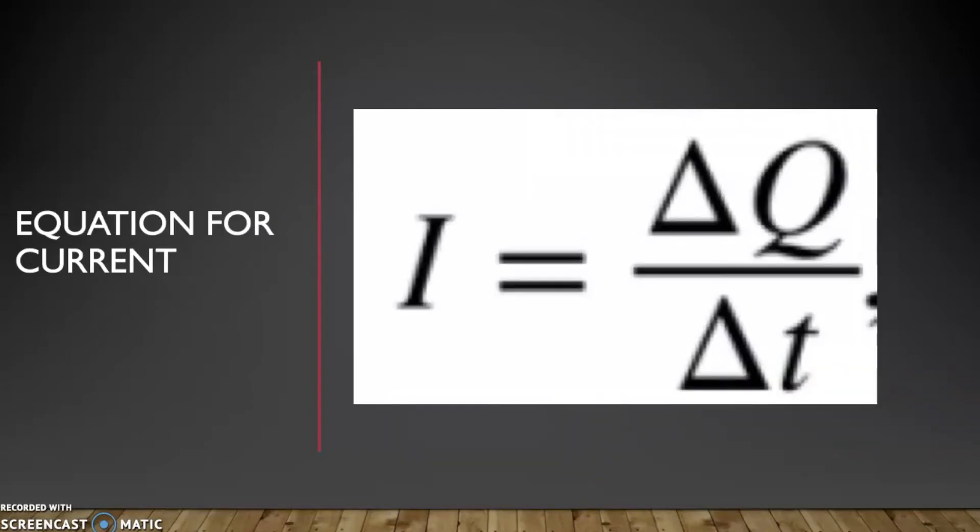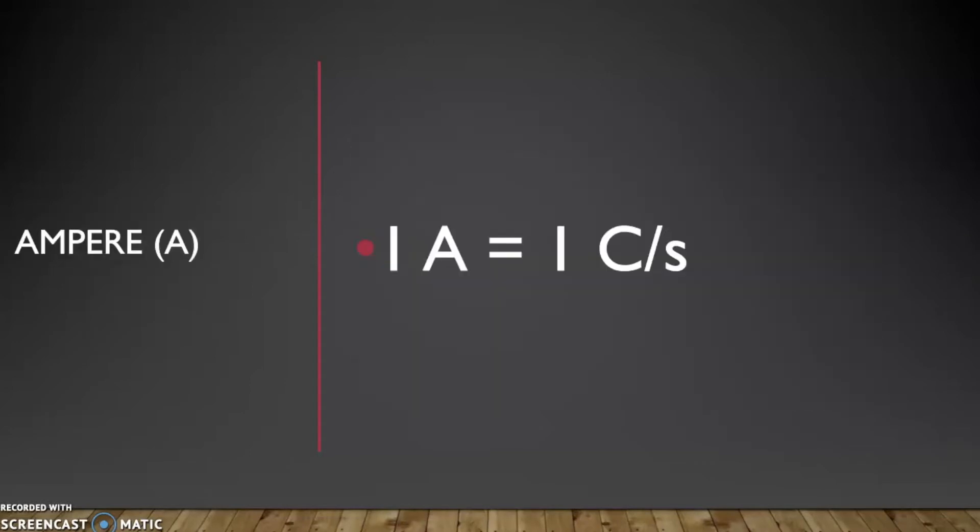The equation for current is I equals delta Q over delta T, which means current equals the change in charge over the change in time in a given amount of area. Current is measured in amps or ampere, and here we see that the symbol for amps is an uppercase A, and one amp is equal to one coulomb per second.